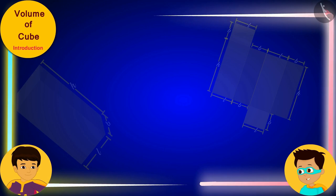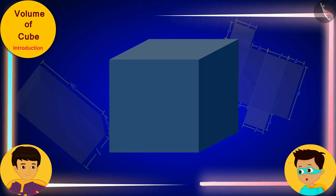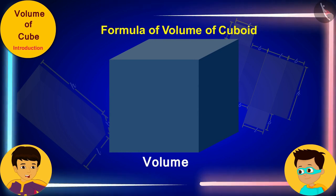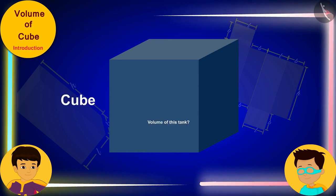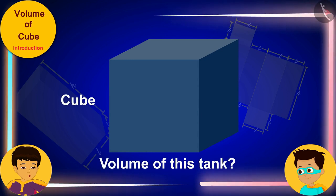Look! As we know that the amount of water filled in this tank will be equal to its volume. But we only know the formula for the volume of cuboid. And this tank is cube shaped. So, how do we find the volume of this tank?